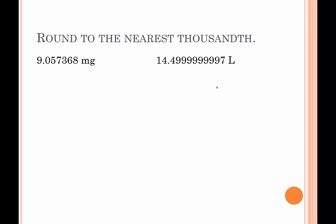For our final two examples, we want to round to the nearest thousandth — that's the third place to the right of the decimal: tenths, hundredths, thousandths. We look to the ten-thousandths spot as our critical digit. The 3 tells the 7 to stay the same, so we round to 9.057 milligrams. Last but not least, for the final number, we're rounding to the nearest thousandth. The critical digit is in the ten-thousandths place and it's a 9. The 9 tells the next 9 to bump up — but we can't bump up 9, so we go to the next place, and that 9 can't bump up either. So we go further — that digit finally gets bumped up. We write this as 14.500 liters. Remember: since it says round to the nearest thousandth, make sure your rounded answer has a thousandths place even if the digit is a zero. These have been examples of rounding to the nearest whole number, tenth, hundredth, and thousandth. Thank you for watching.